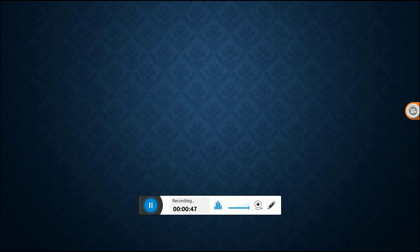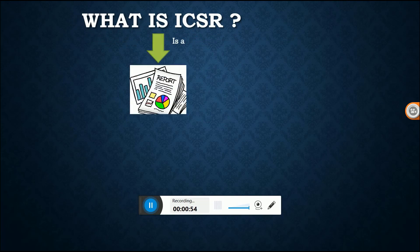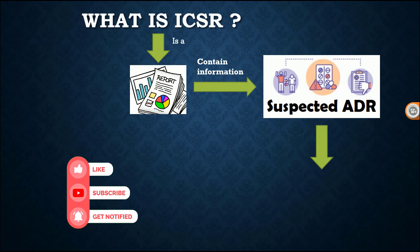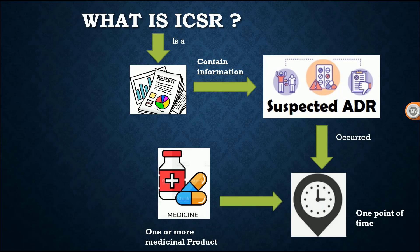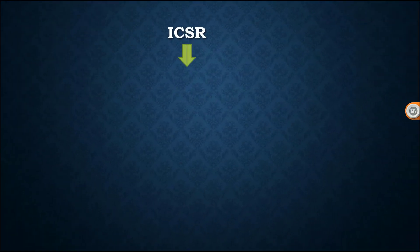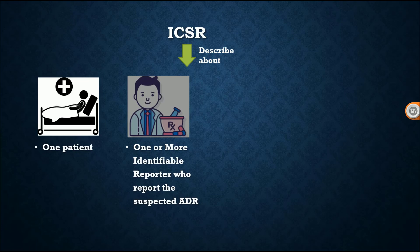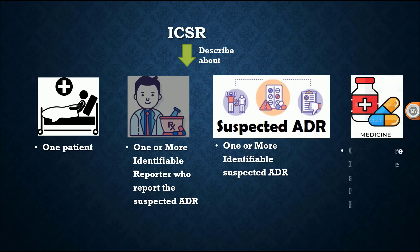So what is ICSR? ICSR is a report which contains information of a suspected ADR occurred at one point of time due to one or more medicinal products. ICSR describes one patient and one or more identifiable reporters who reported the suspected ADR, as well as one or more identifiable suspected ADRs and one or more suspected medicinal products.